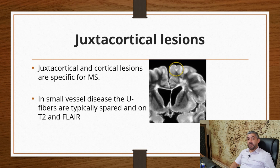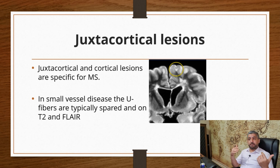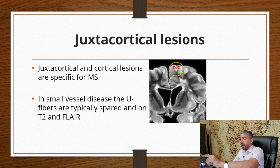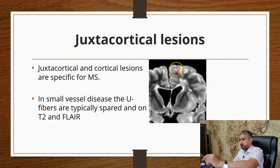Juxtacortical lesions are specific for MS. However, it can be difficult to distinguish them from small vessel disease changes, which is a normal aging process. To differentiate: when you see a hyperintense area, make sure it touches the gray matter — the cortex — with no black line between the lesion and the cortex on FLAIR images. If there is any black line of white matter separating the lesion from the cortex, it is probably not an MS plaque; it is likely small vessel disease or normal aging.